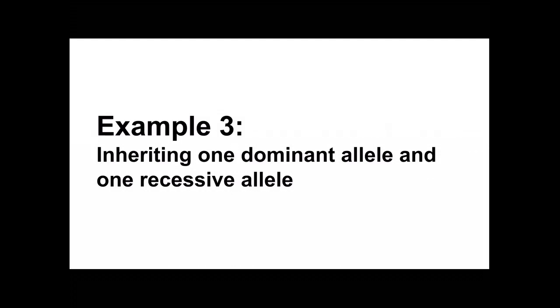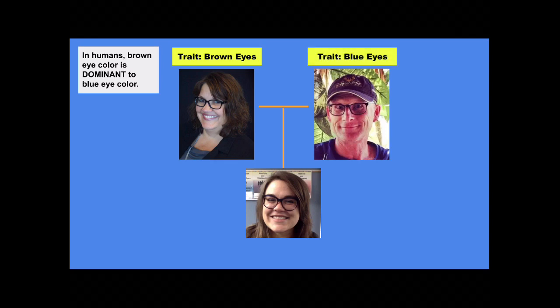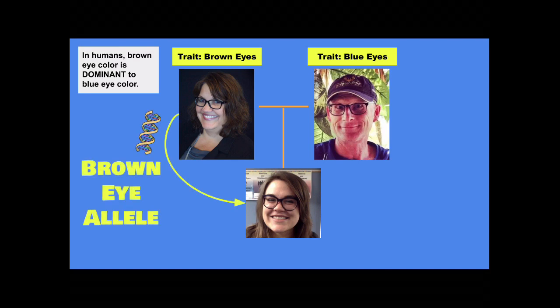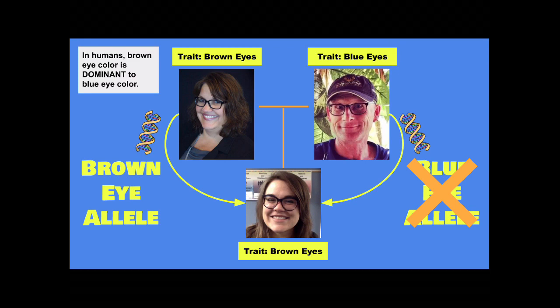This example is a little more complicated: what happens when I get one dominant allele and one recessive allele? In humans, brown eye color is dominant to blue eye color. My mom has brown eyes, and my dad has blue eyes. My mom passes me the brown-eye allele, and my dad passes me the blue-eye allele. So do I have one brown eye and one blue eye? No — I have brown eyes, because brown eye color is dominant and cancels out my dad's blue eye color.